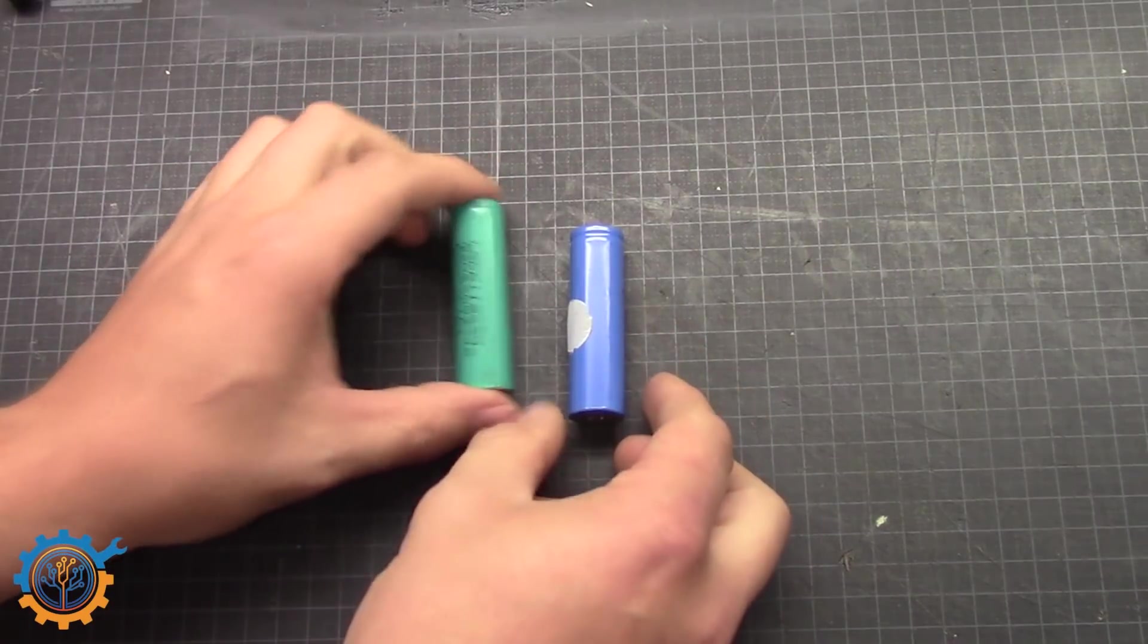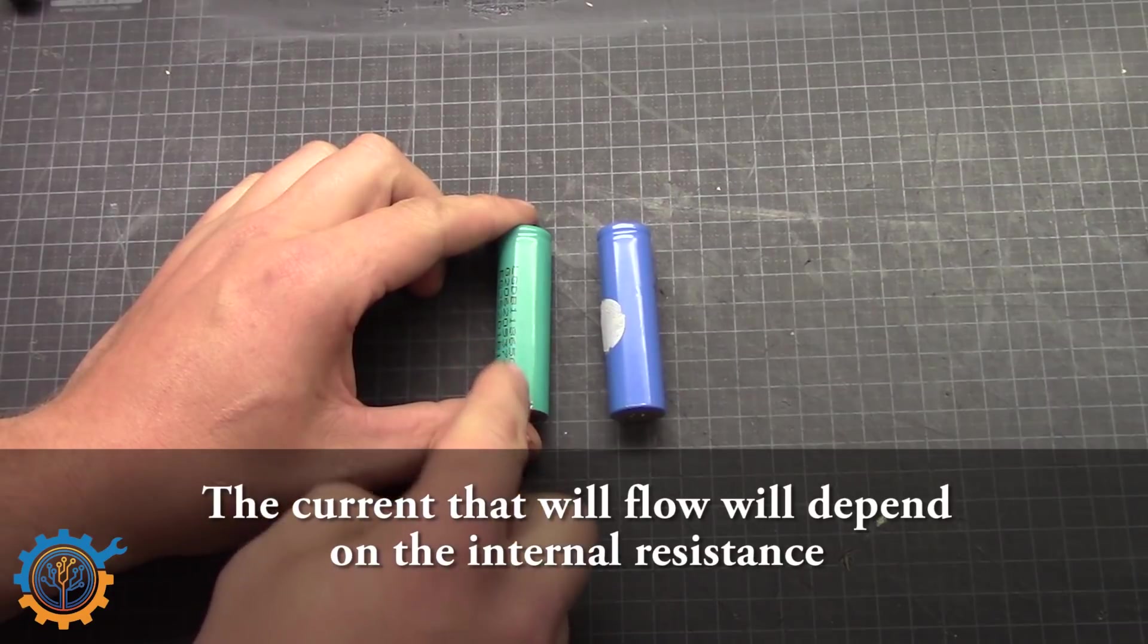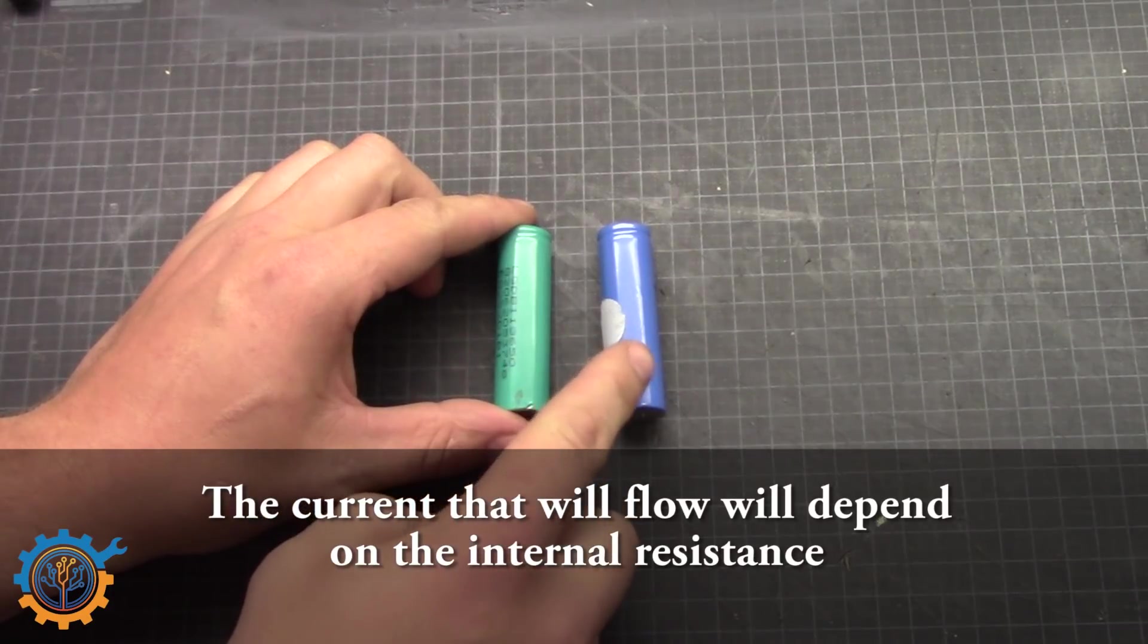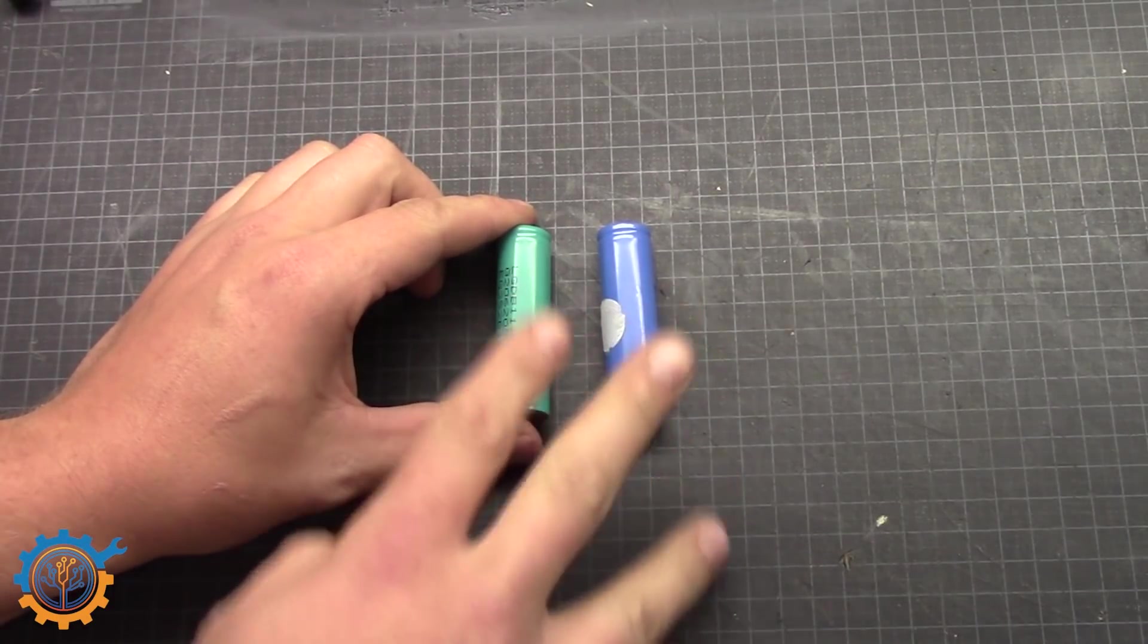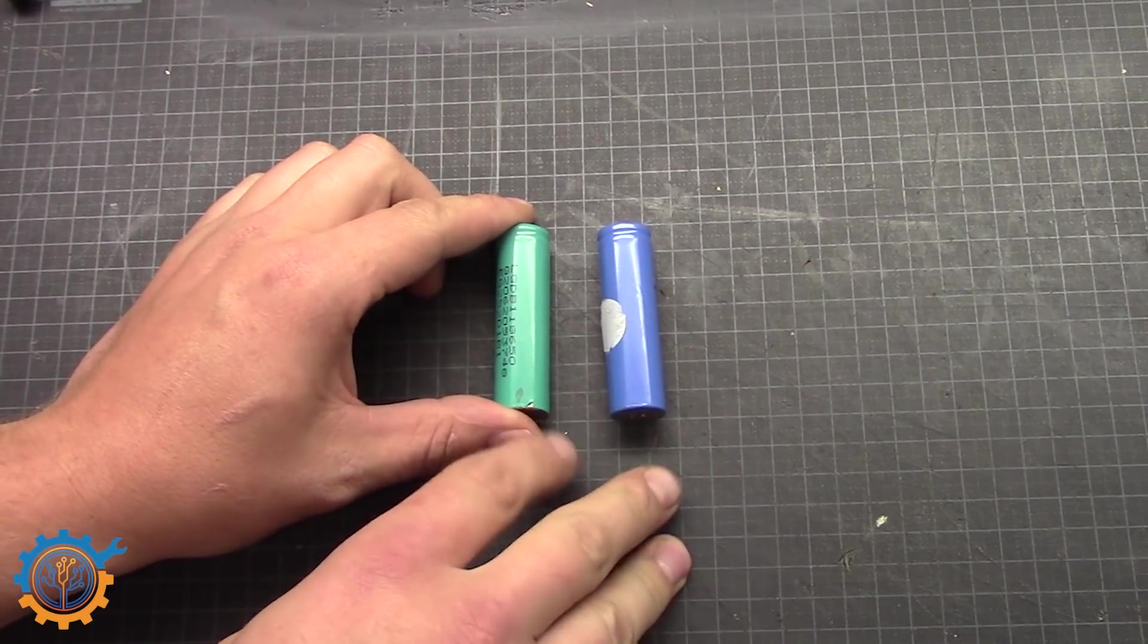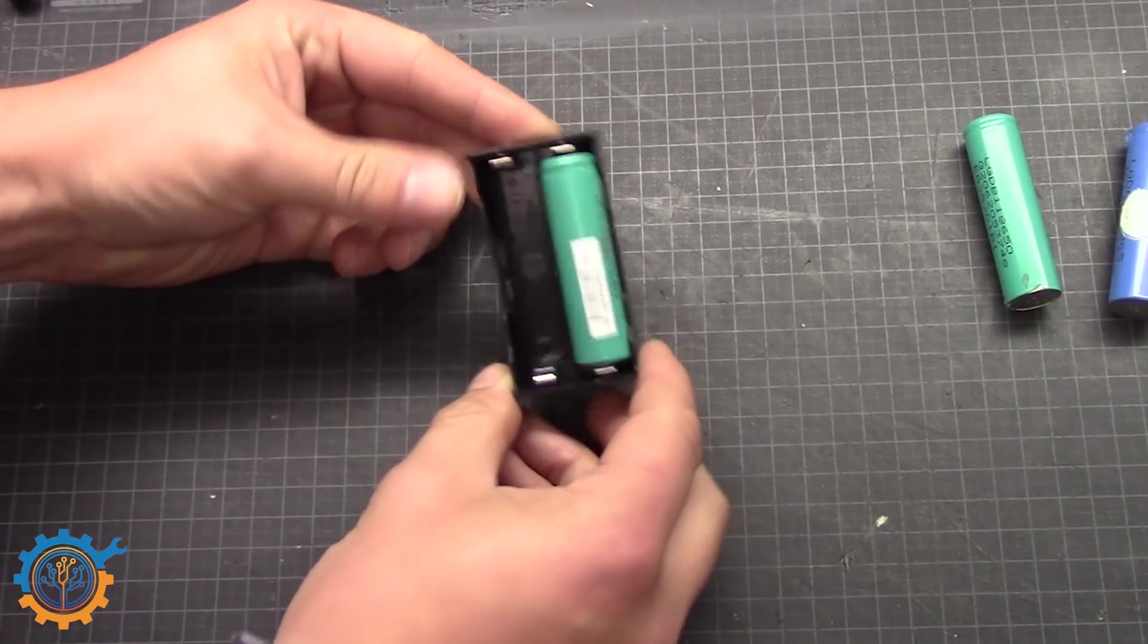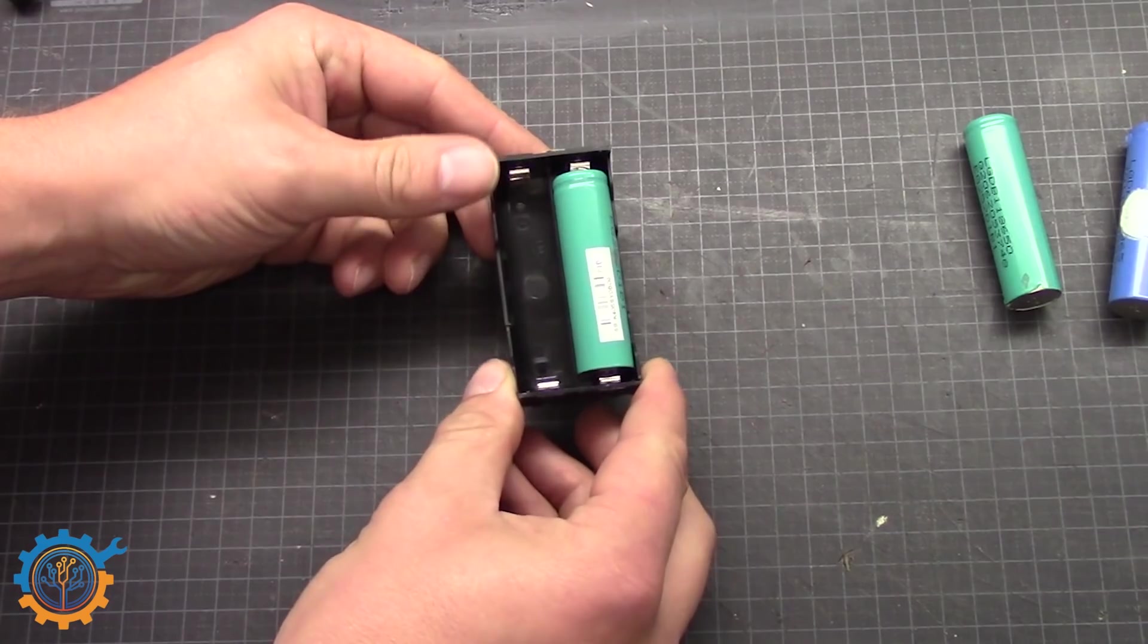If you put two cells in parallel where one is full and one is empty. The current will rush really really fast from one cell to another. And you are stressing out both cells. This is not good at all. And you will or can cause damage to the cells instead.